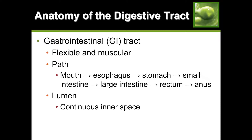When I say GI tract, I mean gastrointestinal tract. It is flexible and muscular - specifically smooth muscle, meaning you cannot mentally control it the way you would a bicep. The path of food through your GI tract starts in the mouth, goes down to the esophagus, then the stomach, then the small intestine, then the large intestine, then the rectum and the anus.